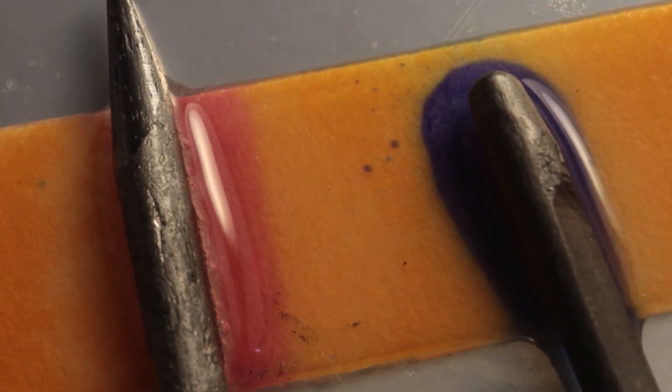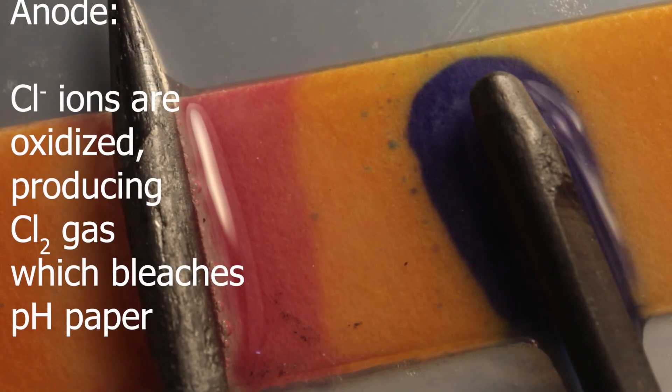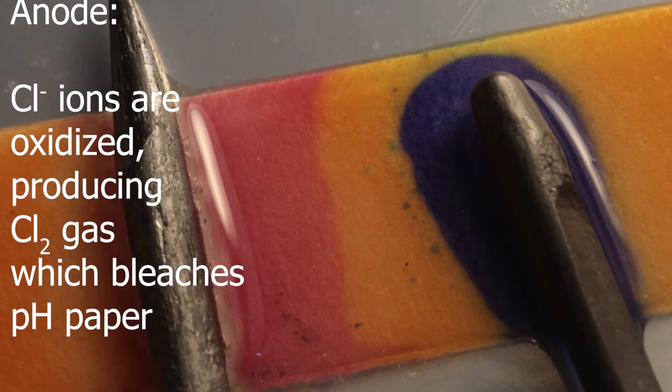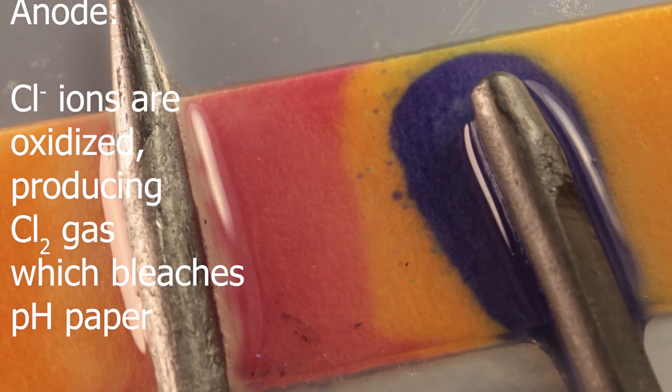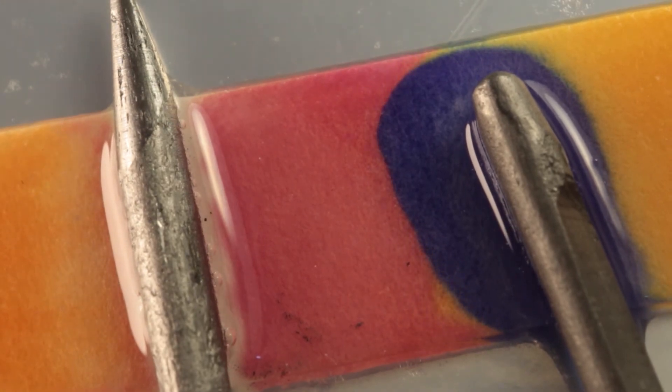At anode, electrons are taken away from chloride ions. Chlorine is formed, which dissolves in water, reacting with it, making solution acidic. And test for chlorine is bleaching of indicator paper.